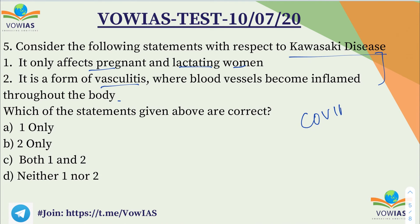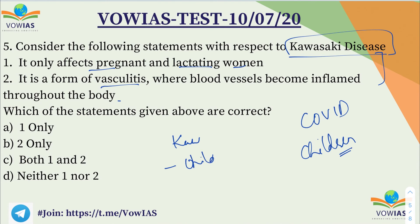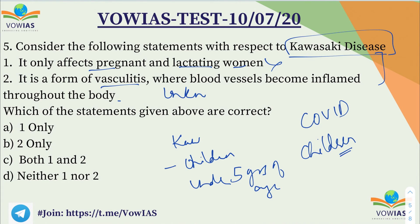The context here is the COVID-19 pandemic. Kawasaki disease was seen in children linked to COVID-19. Kawasaki disease happens in children under 5 years of age, so the first statement — that it only affects pregnant and lactating women — is incorrect. The cause is unknown.